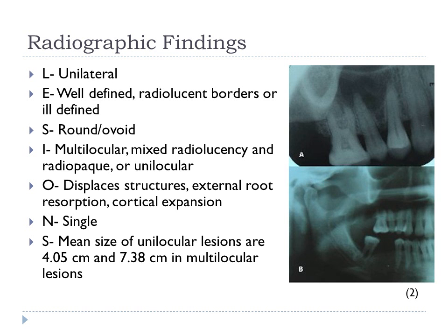Radiographic findings: the lesions are localized hemilaterally to the periradicular area and can be found anywhere in the maxillary or mandibular jaw, most commonly the anterior mandible. The edges are usually well-defined radiolucent borders due to the slow growth, while faster-growing lesions will present ill-defined borders. The shape is normally round or ovoid. The majority of these lesions are multilocular, but some can also be unilocular.